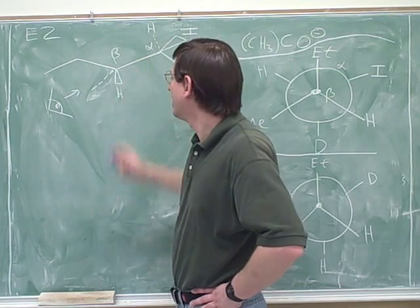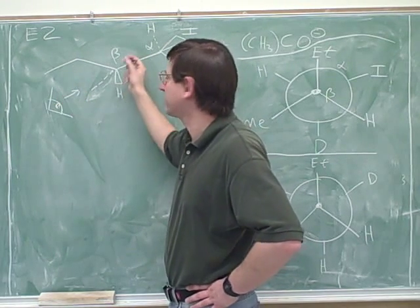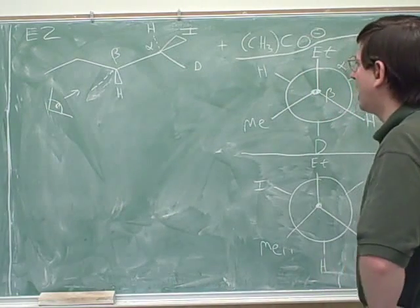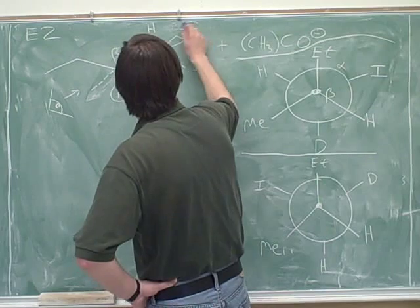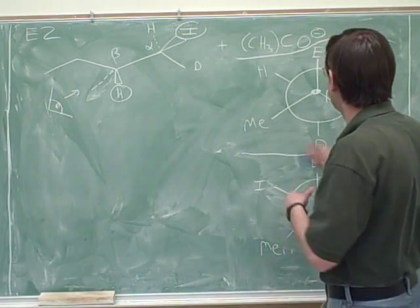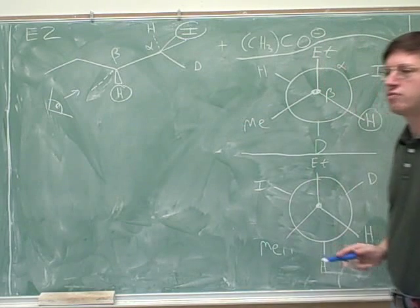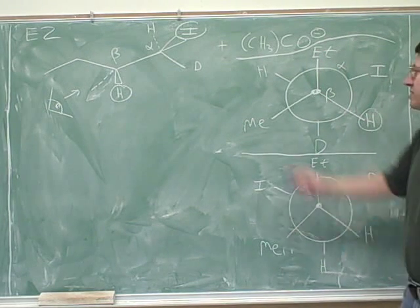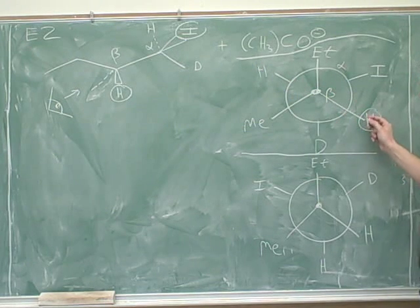Remember, you're looking down the alpha-beta bond. This didn't mess you guys up anyway, but it's best to draw it so that the line of sight is parallel to the alpha-beta bond. And then it's a good idea to circle the beta-hydrogen and the leaving group so we don't lose track of those. So here's the beta-hydrogen. Why is it so important to circle them? Because you don't want to confuse the beta-hydrogen with, say, the alpha-hydrogen — you don't want to lose track.